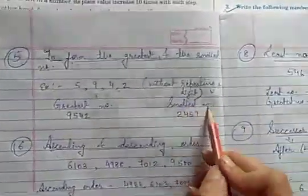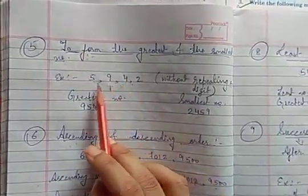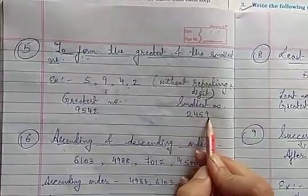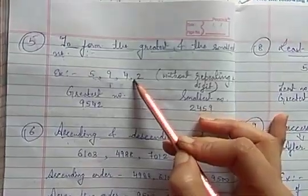Now come to the smallest number. So from these given digits, 2 is the smallest one, then 4, then 5, then 9. So 2459 is the smallest number that we form from these given digits.